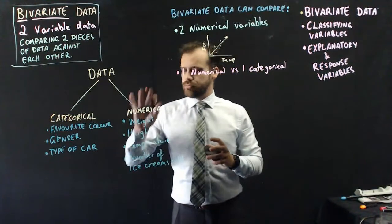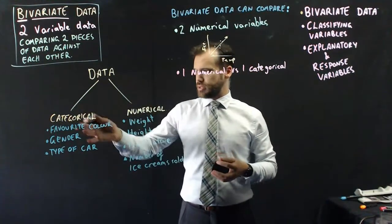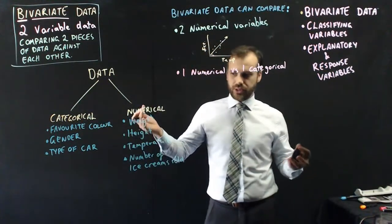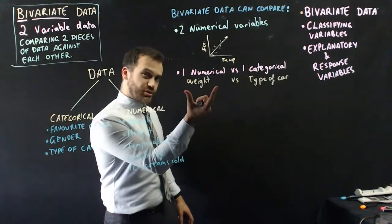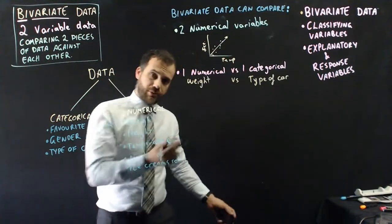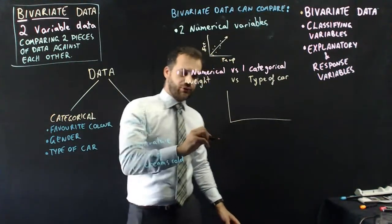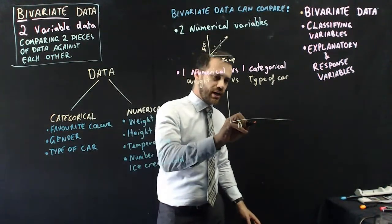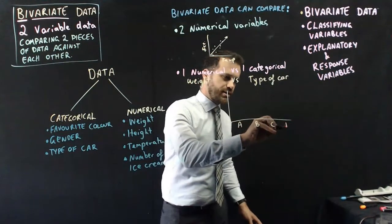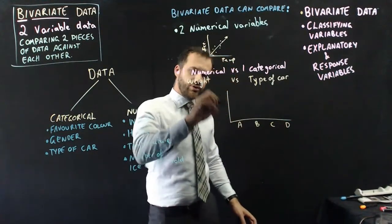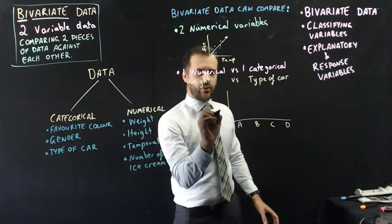But of course we could also compare one numerical data point against one categorical data point. Say something like a person's weight versus the type of car they drive. Now that would look a little bit different. Because we would have car A, car B, car C, car D.